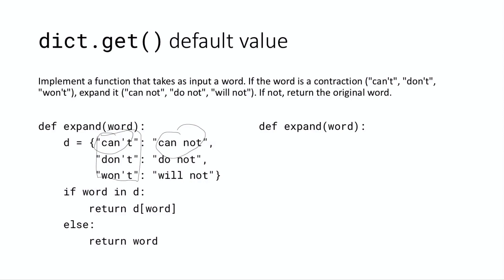So we say we want to get the dictionary and the key is the word, and this will give us the value, which is the expanded form. And then otherwise we just return the word untouched. We don't want to do anything to it.